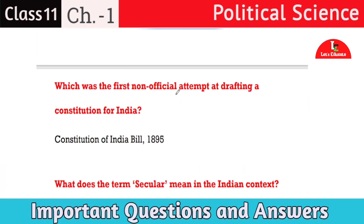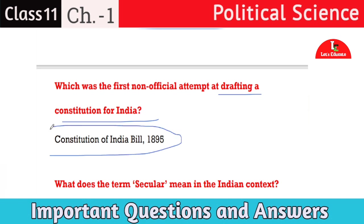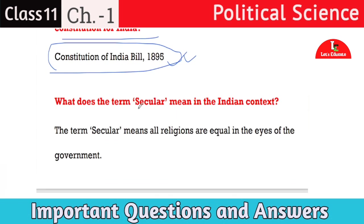Next question: which was the first non-official attempt at drafting a constitution of India? The Constitutional Bill of 1895 is called the first non-official attempt to draft the constitution of India.